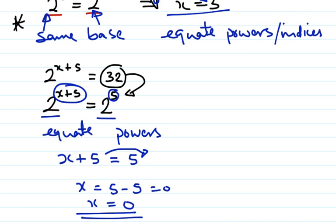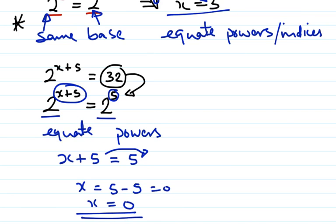Alright, let's take it up a notch and see how difficult it can get. Alright, here we have a different situation. And we're going to work it the same way. Let's get the same base first. So base 5 is the lowest I can get here. So I'm going to keep my base 5 on the left hand side, and sort out the base on the right hand side. So I know that 125 is 5 to the power 3.